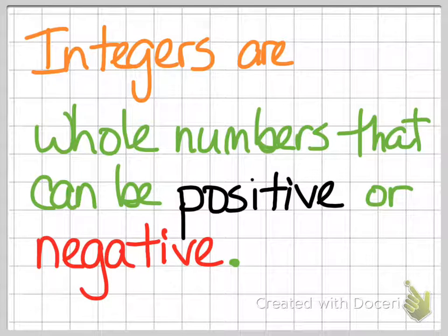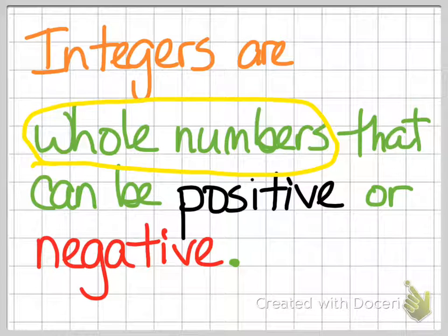Integers are whole numbers that can be positive or negative. The key is to realize that we are talking about whole numbers and not anything like a fraction or a decimal.